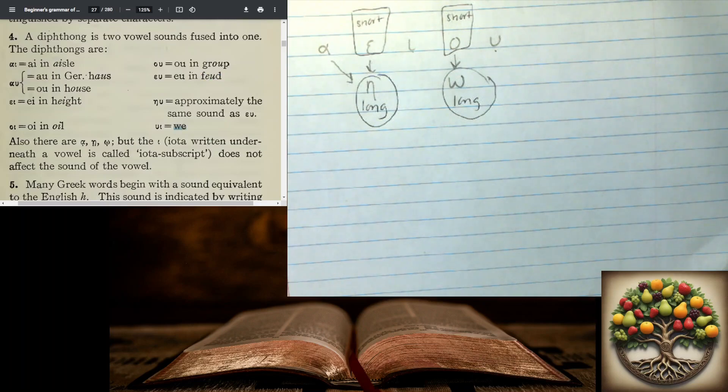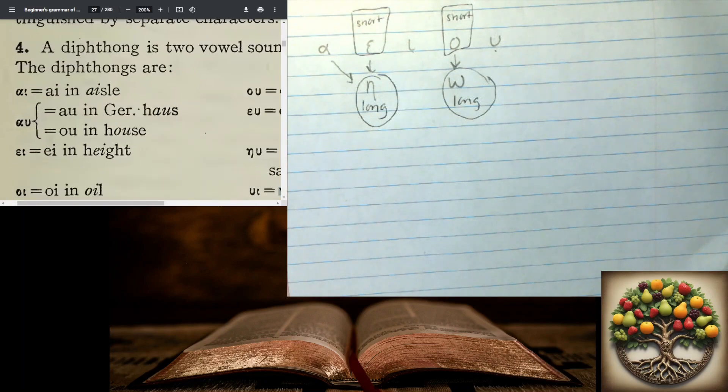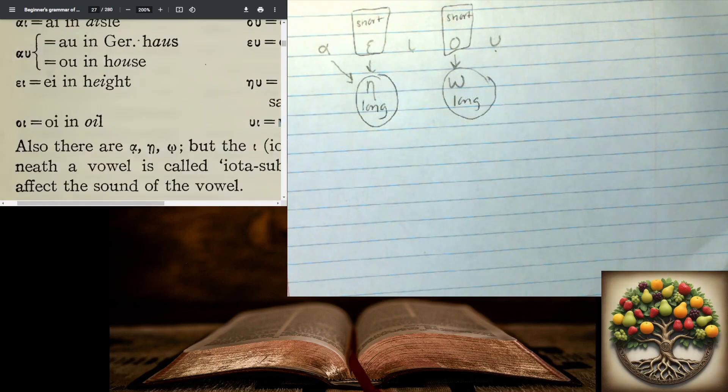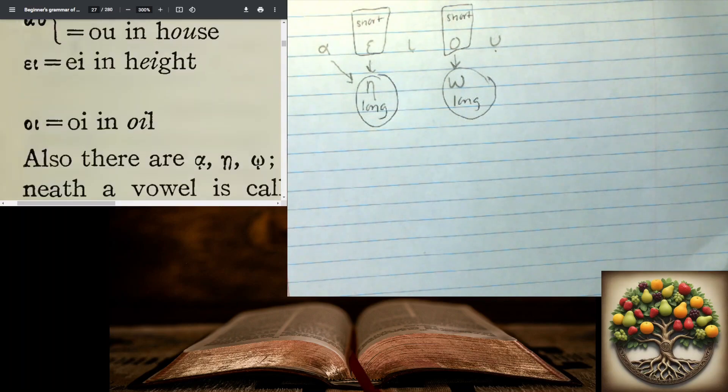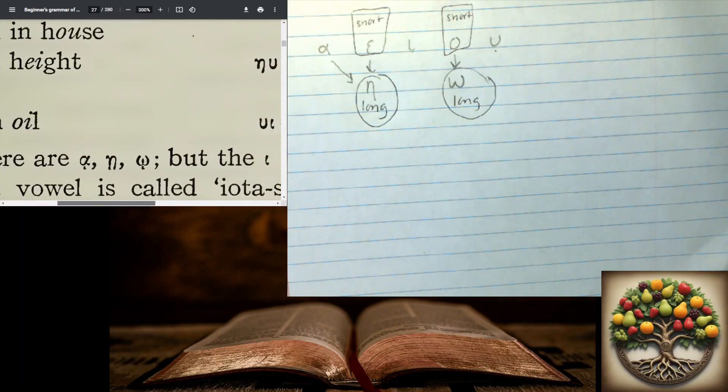Now something we're going to talk about is when you put these vowels together, sometimes that iota is going to run underneath the letter. And that's called the subscript. It's called an iota subscript. And I'll write these out on my paper for you also.